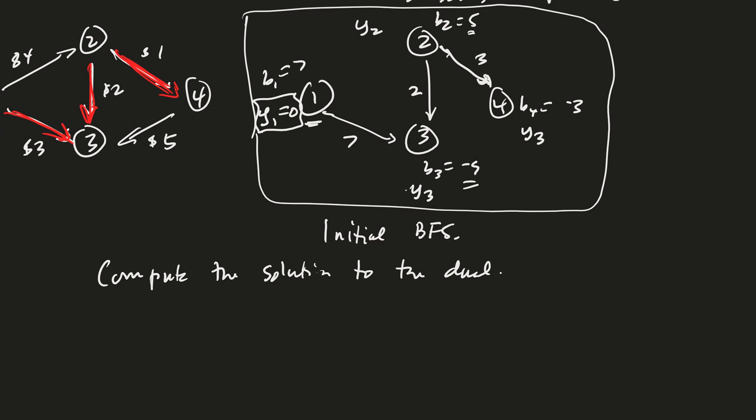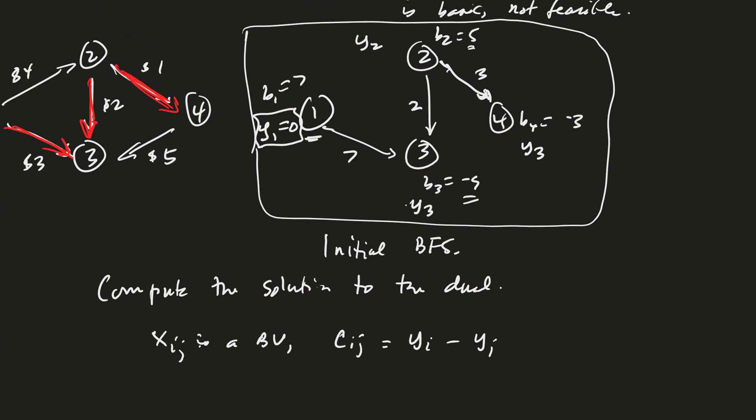So the way we're going to do this is on the beginning node, we're going to set the value of the dual equal to 0, just like we did in the transportation problem. And then each of the other nodes is going to have a Y value that we're going to compute. And we're going to compute it according to the formula that for edge, or you could say for the variable Xij, right, if Xij is basic, then we know that Cij is equal to Yi minus Yj. Okay, good.